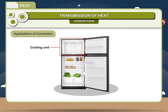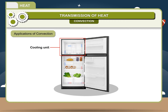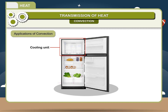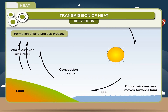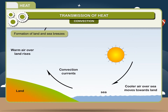(2) The cooling unit in a refrigerator is fixed near the top of the fridge because hot air becomes lighter and rises up, and when it comes in contact with the cooling unit it becomes cool and comes down, hence all articles inside the fridge remain cool.